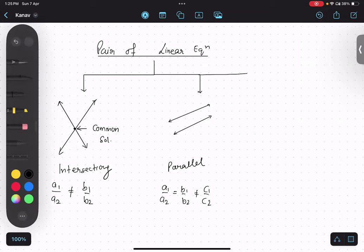Now, what is the third condition over here? Coincident line. Coincident, which is like overlapping.